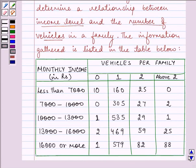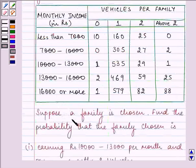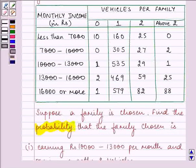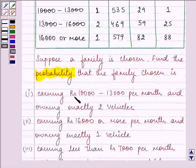This is the table in which the monthly income groups are listed, and the vehicles per family — 0, 1, 2, and above 2 — are mentioned with respect to each income group. Suppose a family is chosen; find the probability that the family chosen is earning Rs. 10,000 to 13,000 per month and owning exactly 2 vehicles.